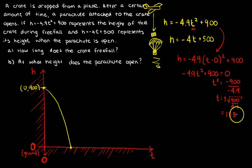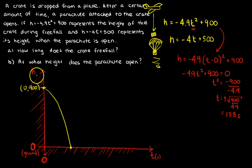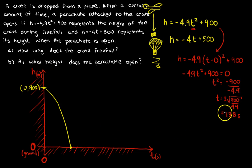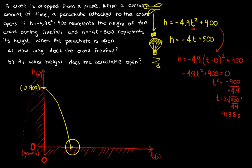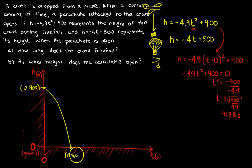Is this in seconds? I'm going to assume it's in seconds, with H in meters. So T ≈ ±13.8 seconds — it's plus or minus, but I don't care about the negative part of the graph. I'm only interested in the positive value, which means the root is at (13.8, 0). There's the root I'm looking for.